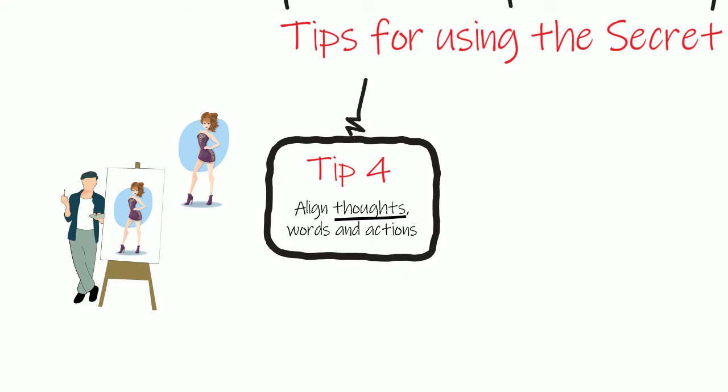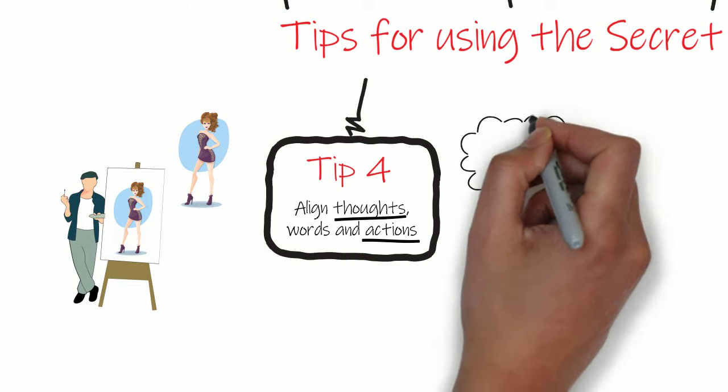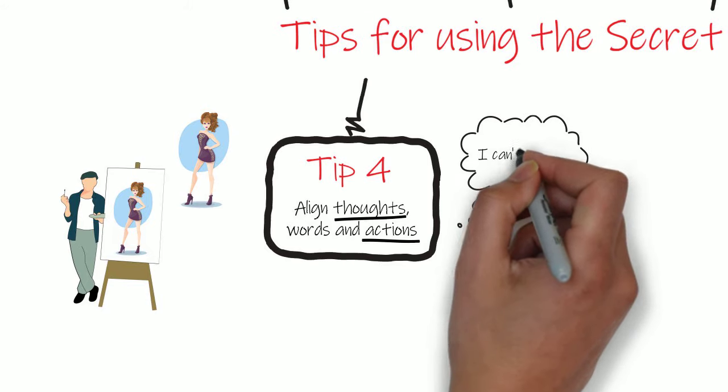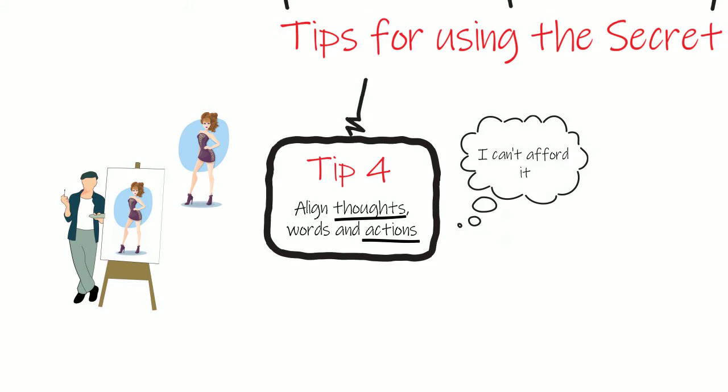This shows you how easy it is for what you want and what you do to not align, and one must be aware of the thoughts which may be limiting them. Some examples are thoughts like 'I can't afford that' or 'all men are pigs.'